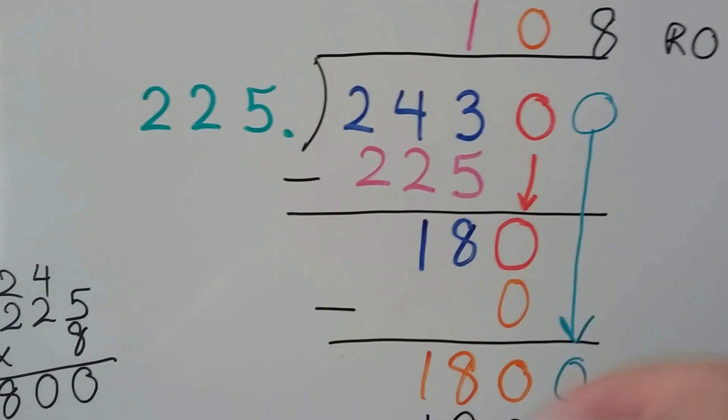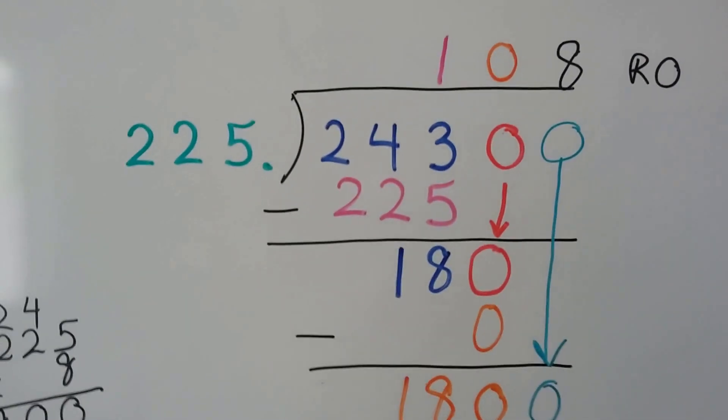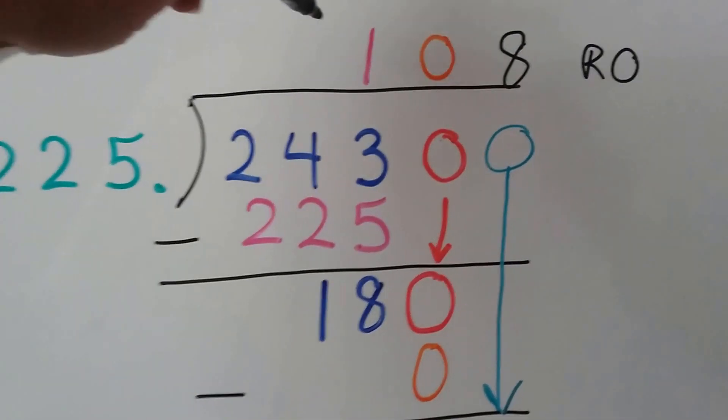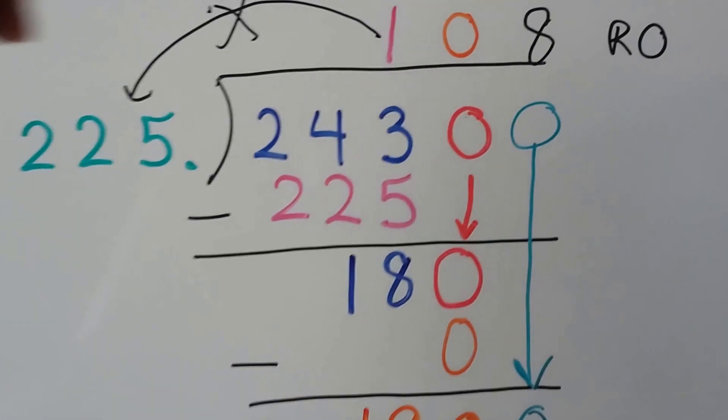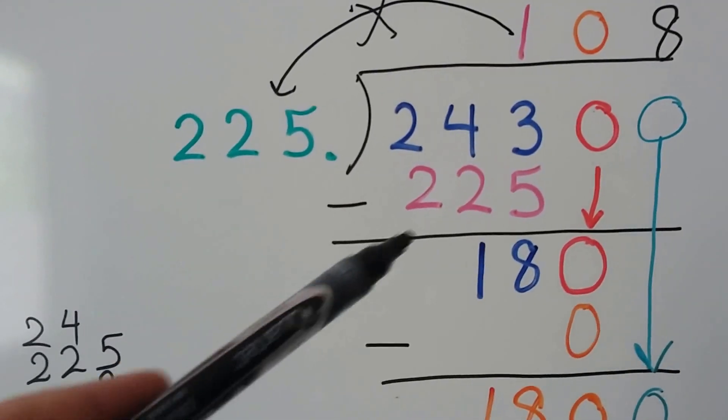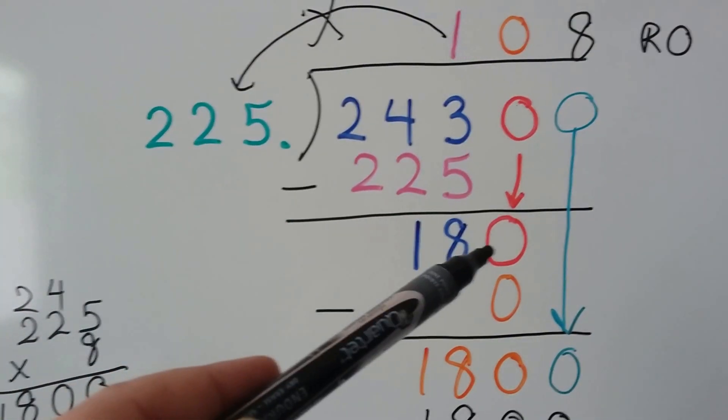And 225 times 1 is 225. Now when I teach other people how to do long division, I tell them to put an x there to remind yourself that you're multiplying this whole thing. And 1 times 225 is 225. We do our subtraction, we get 18, and now it's the zero's turn to come down.